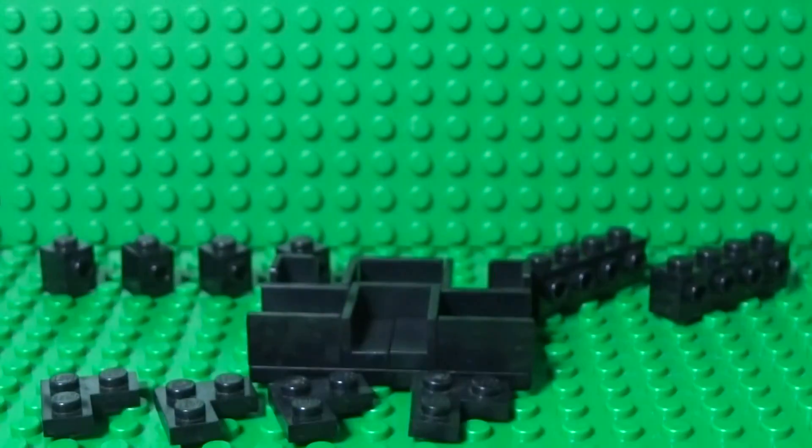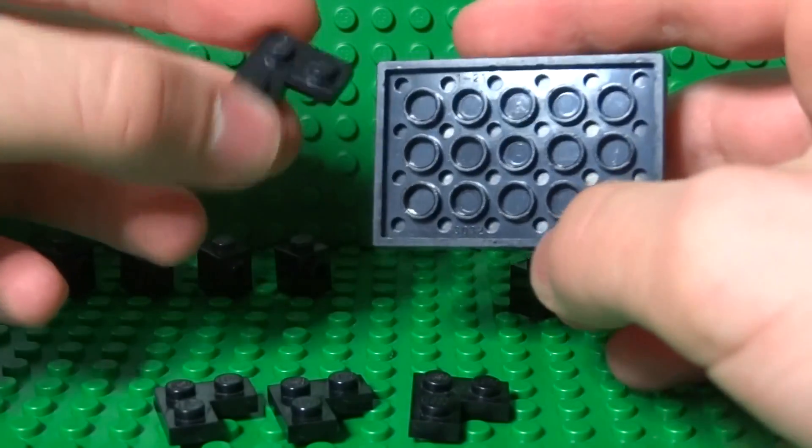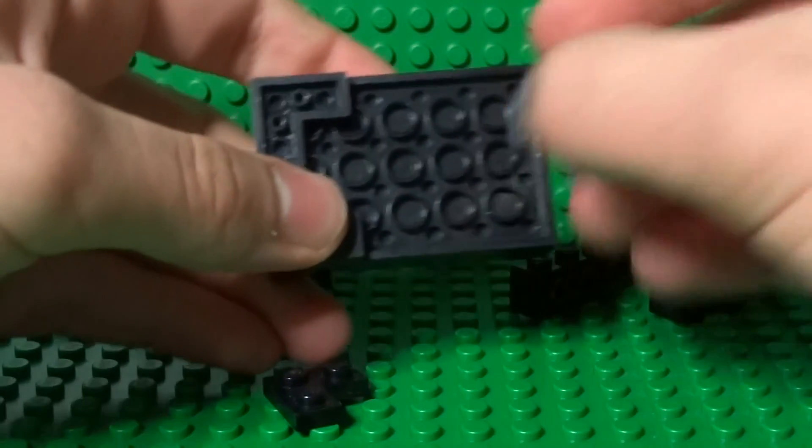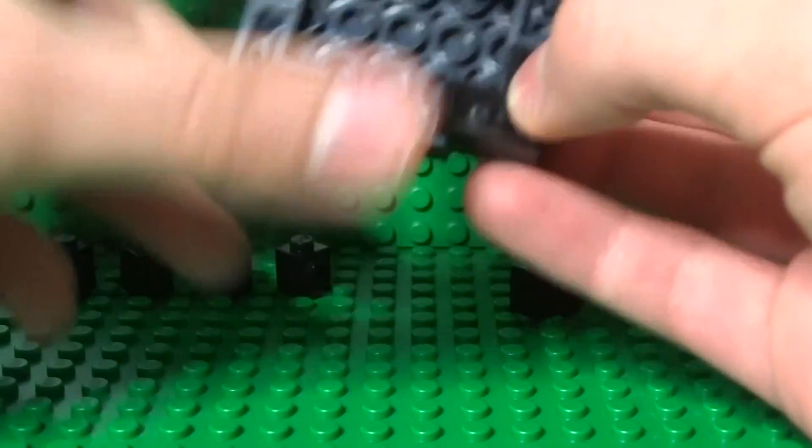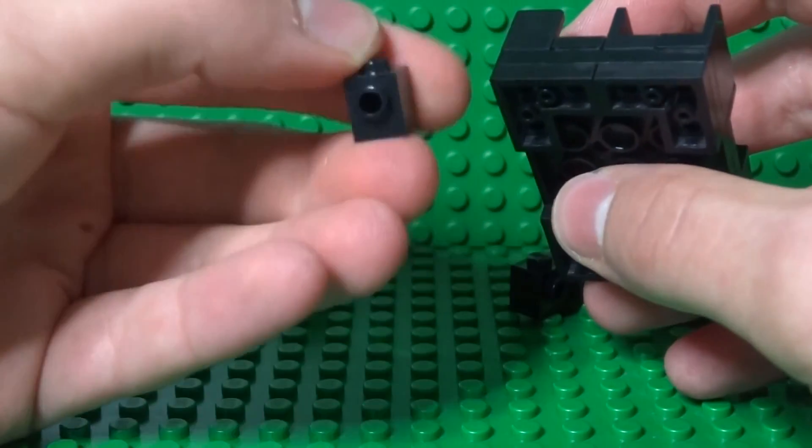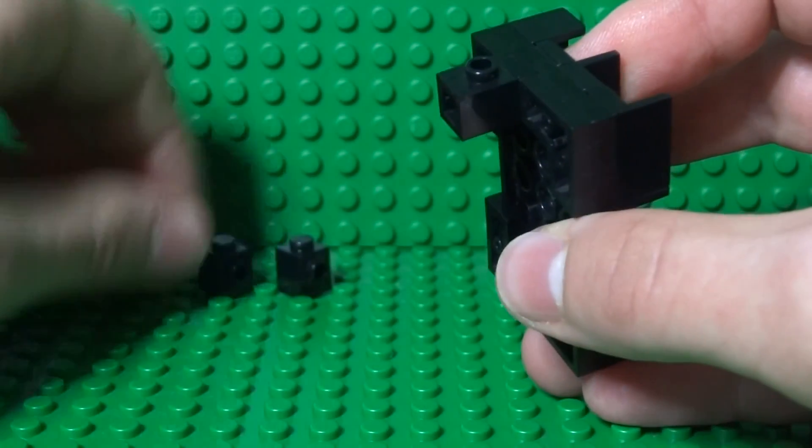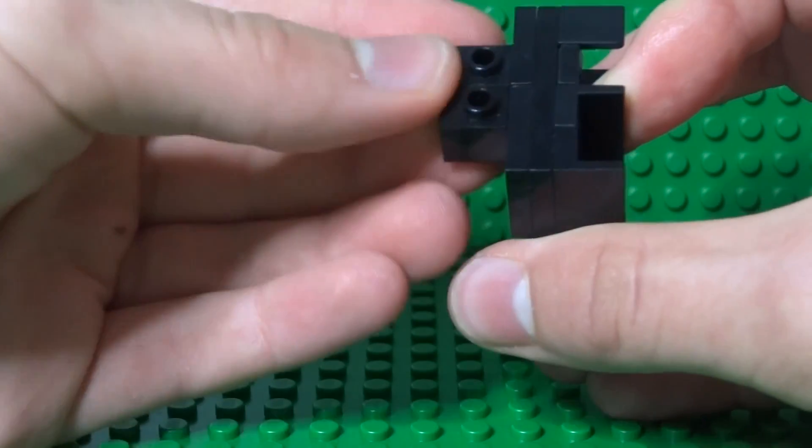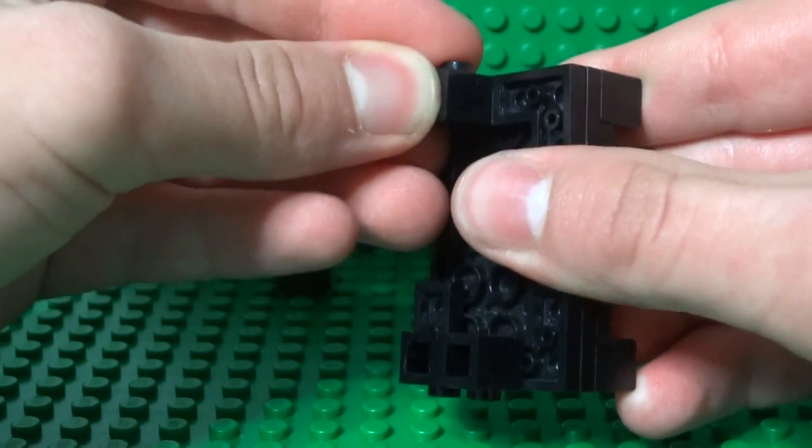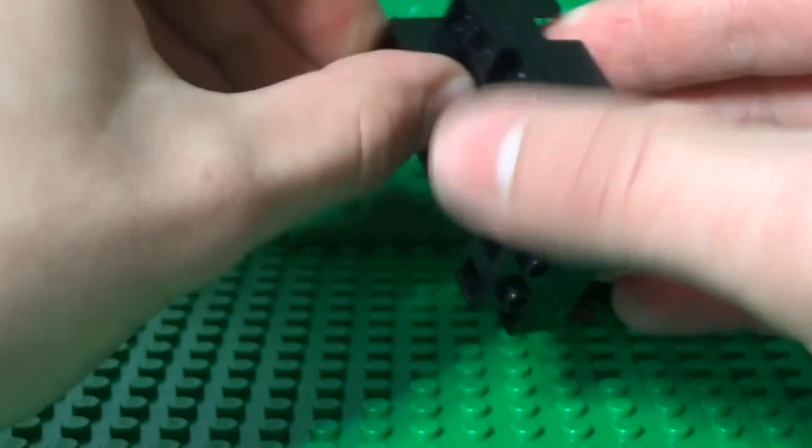So now you take your construction so far and all of your corner pieces and just place them in the corners of your 4 by 6 plate. That just raises it up a little bit for the panels we're going to add later. Now you can take your one by one bricks with the stud on the side, just add them just on the ends there and on the opposite end. This will allow you to clip some panels on to complete the structure later.